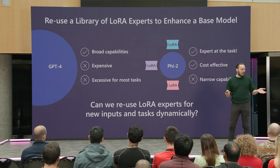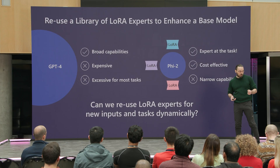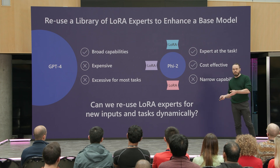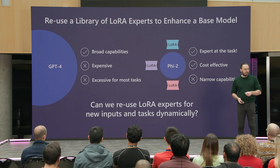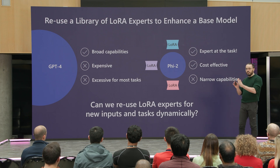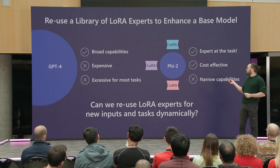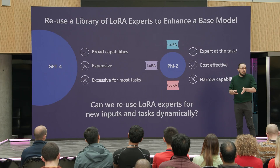This has basically boosted the development of small language models, for example the mighty and very powerful Phi-2, that can be adapted to user tasks either with full fine-tuning, which means we change all the parameters of the model, or with parameter efficient adaptation, for example by training LoRAs, which only change a small amount of the parameters. We can see these small adapters as experts at their own tasks, which gives us a cost-effective model, but the problem is that we now have only very narrow capabilities.